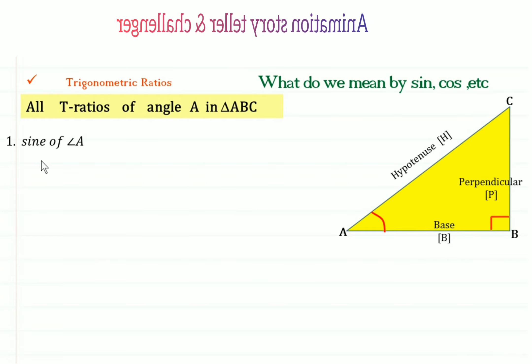Students, the first T-ratio is sine of angle A. T-ratios are always defined for some angle. When I say sine alone, I apparently mean that I've taken a ratio of the perpendicular and hypotenuse with respect to an angle.